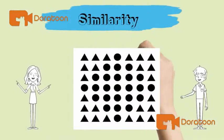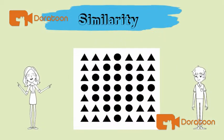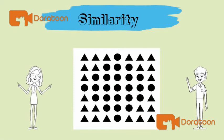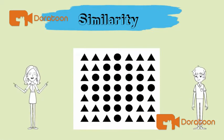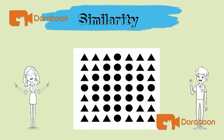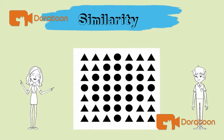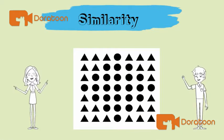Similarity. This Gestalt principle suggests that we naturally group similar items together based on elements like color, size, or orientation.